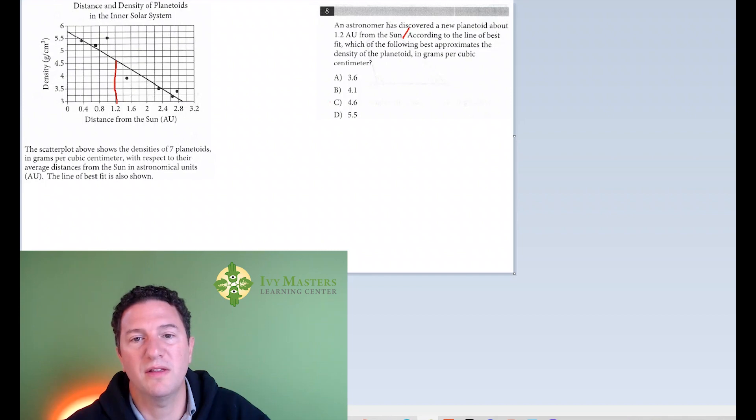And I read the rest. According to the line of best fit, which of the following best approximates the density of the planetoid in grams per cubic centimeter? Sure enough, if I go to the left from there, and this is where I got that, 4.6, 4.7. Yes, your correct answer is C.